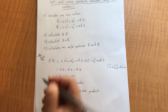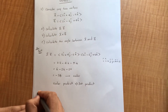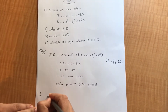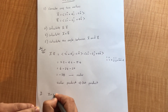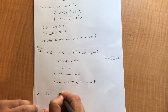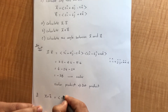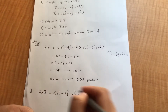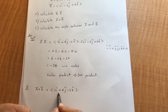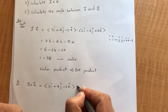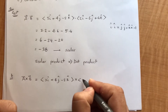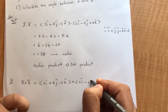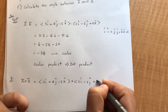The first problem is solved. Now let's move to the second problem: calculating the cross product. We have the same two vectors — vector a is 3i + 4j − 5k and vector b is 2i − 6j + 4k.